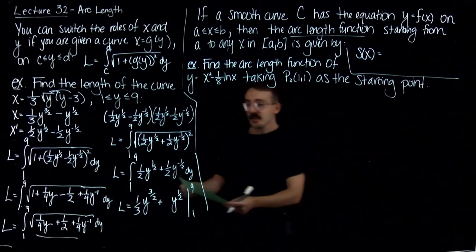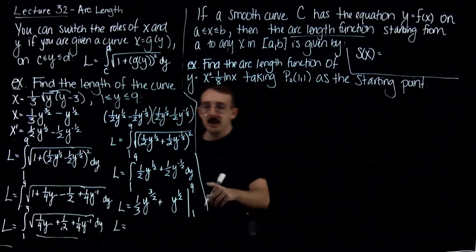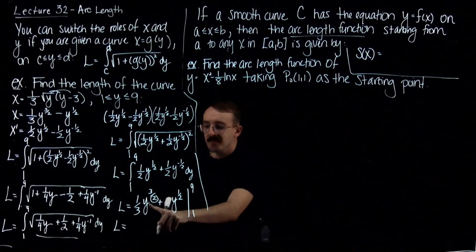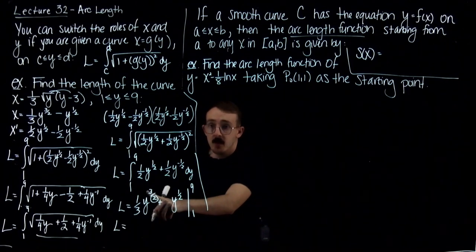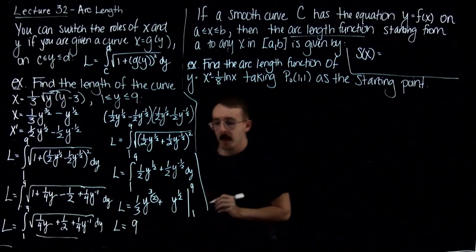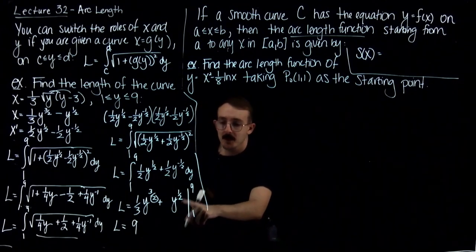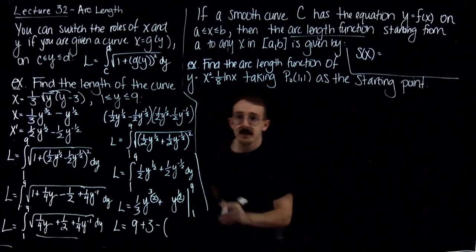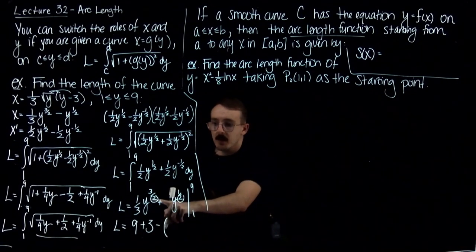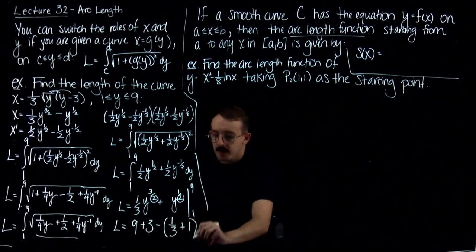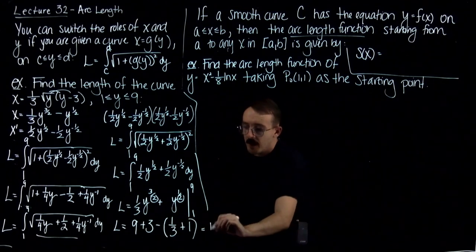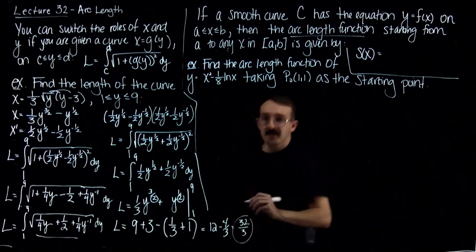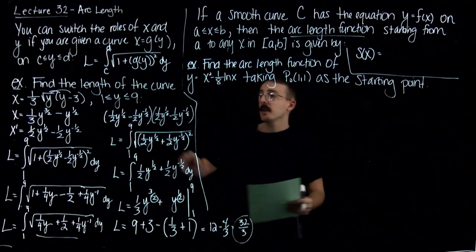Plugging in 9: square root of 9 is 3, cubed is 27, divided by 3 is 9. For the second term, square root of 9 is 3. Then minus, plugging in 1: 1 to any power is 1, so 1/3, and ln of 1 is 0. So I get 12 minus 4/3, which is 32/3. That is the exact length of this curve from y equals 1 to y equals 9.